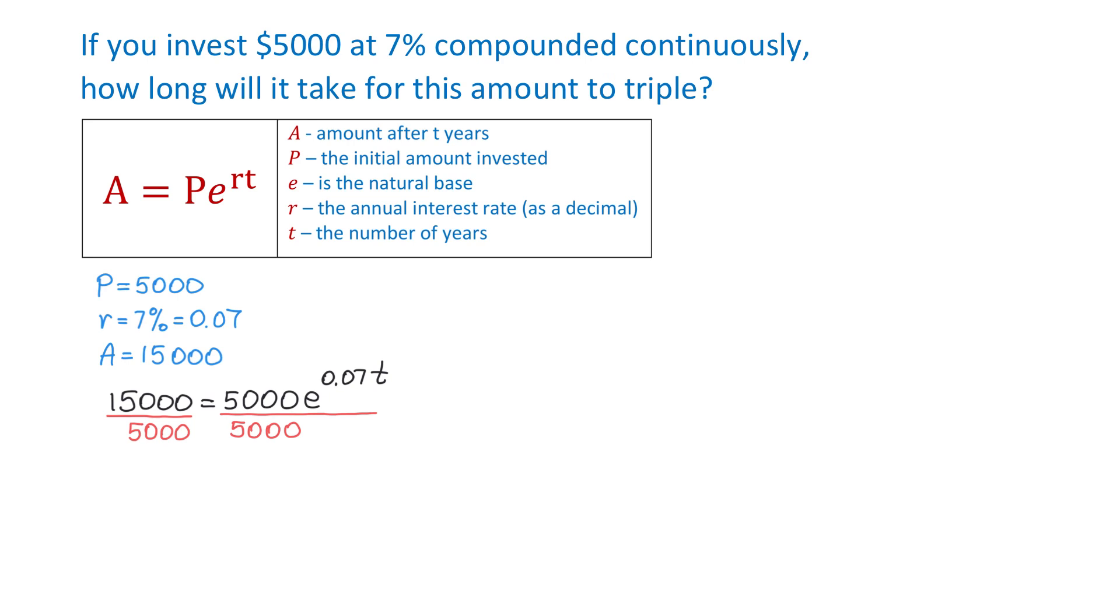Then on the left side, 15,000 divided by 5000 is 3. On the right side, 5000 will cancel and we will have e to the power of 0.07t.